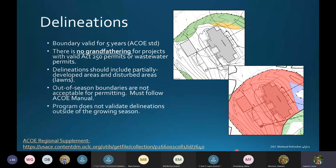Out-of-season boundaries cannot be accepted for permitting. Our rules specifically state that you must follow the Army Corps of Engineers manual. Our program staff do not validate delineations outside of the growing season. We're looking for maybe another week or so for some areas to be officially within the growing season.